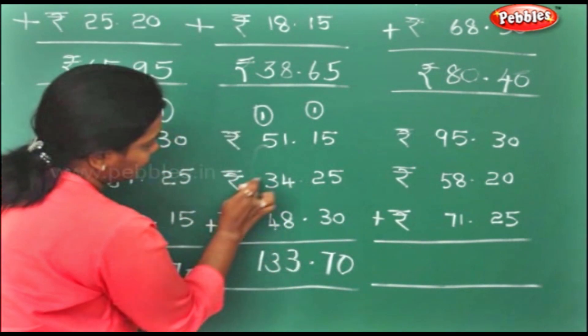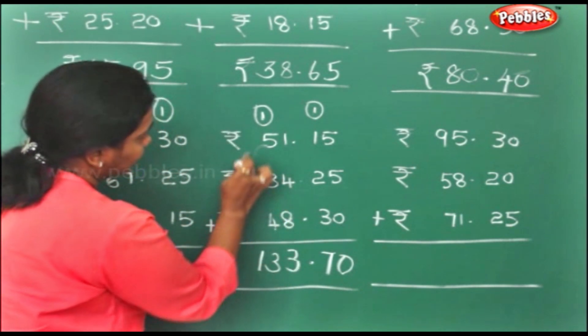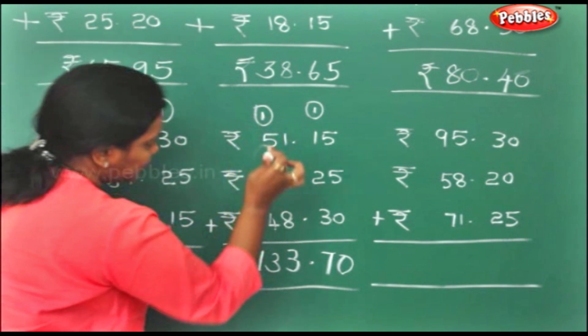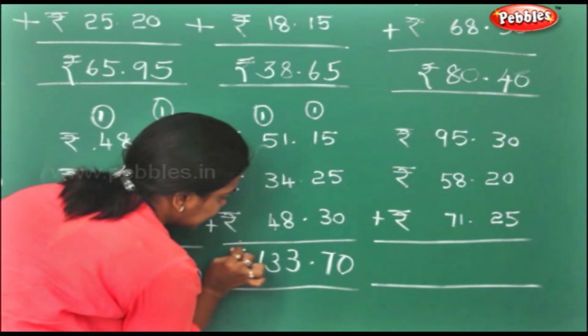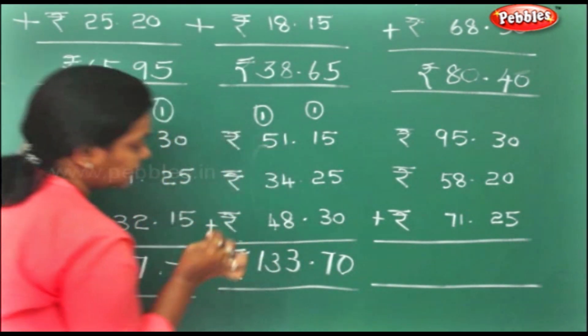You can either count it from here to here or here to here — whichever is convenient for you, you can count it.